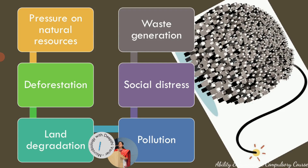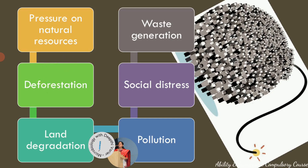The second problem is that pressure on natural resources causes us to harm the environment. It first causes deforestation. Deforestation is required for agriculture, for housing the extra people, and for setting up industries because we need more things now. Deforestation again has its own set of problems — you can look at a video on deforestation to know more about this.